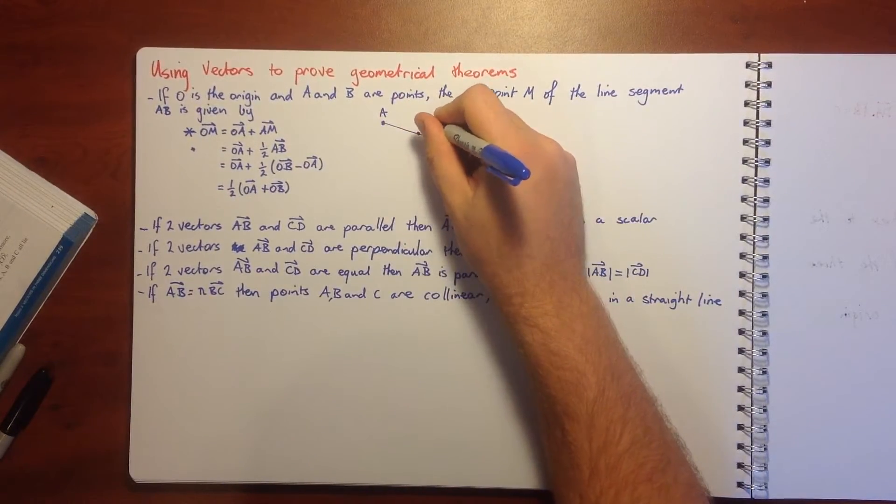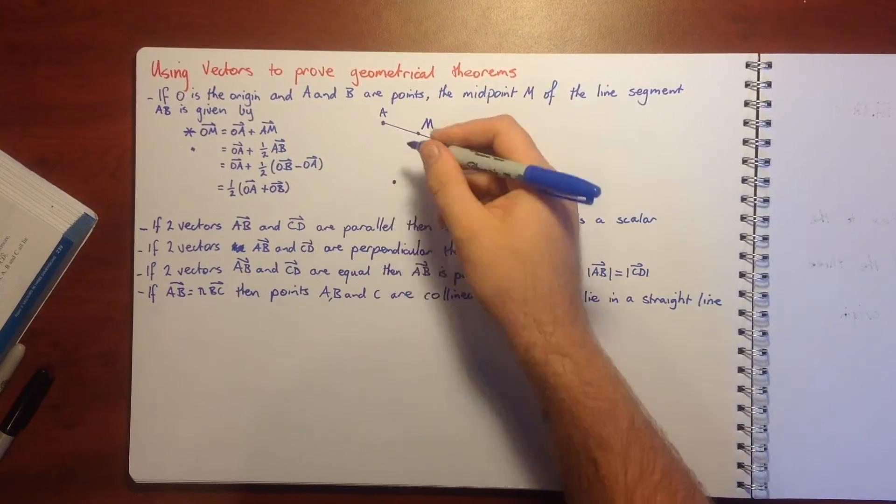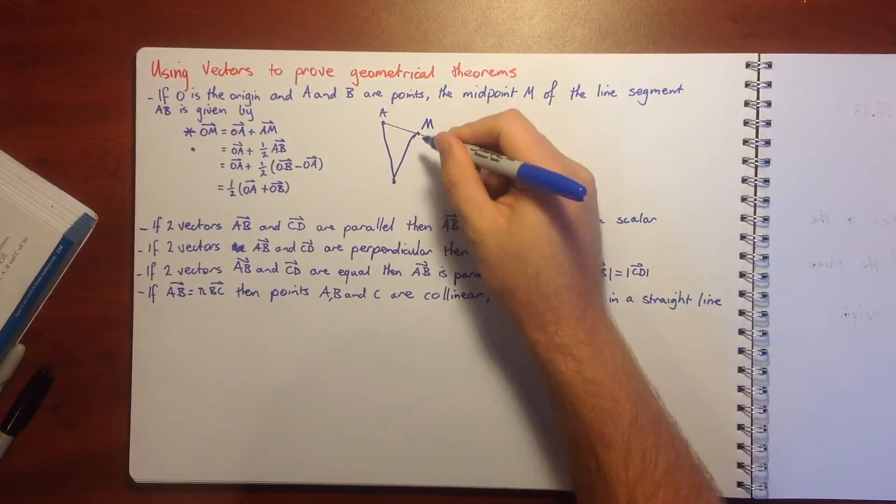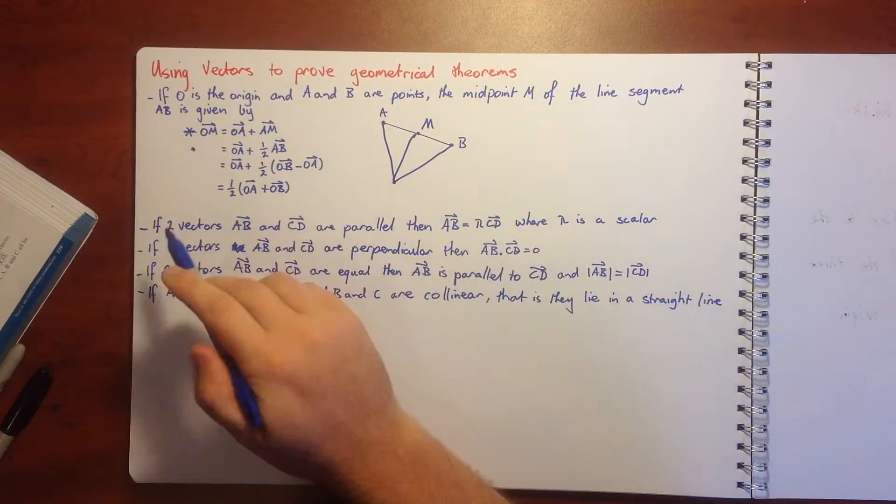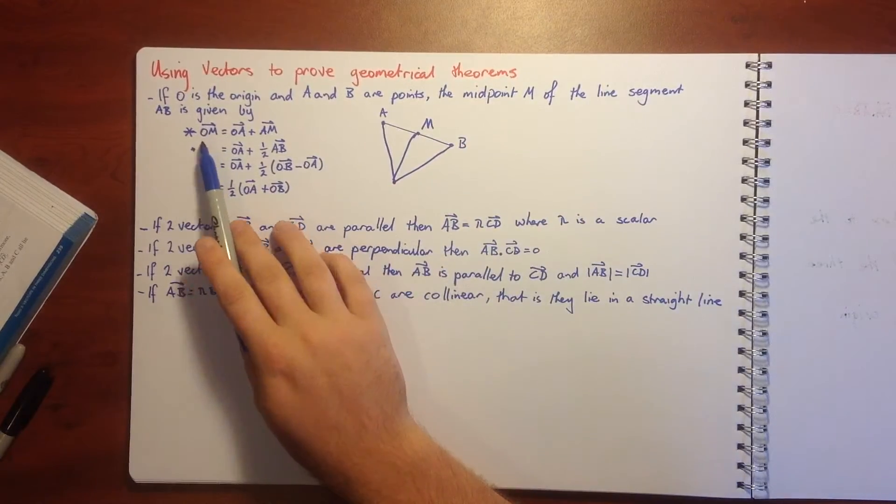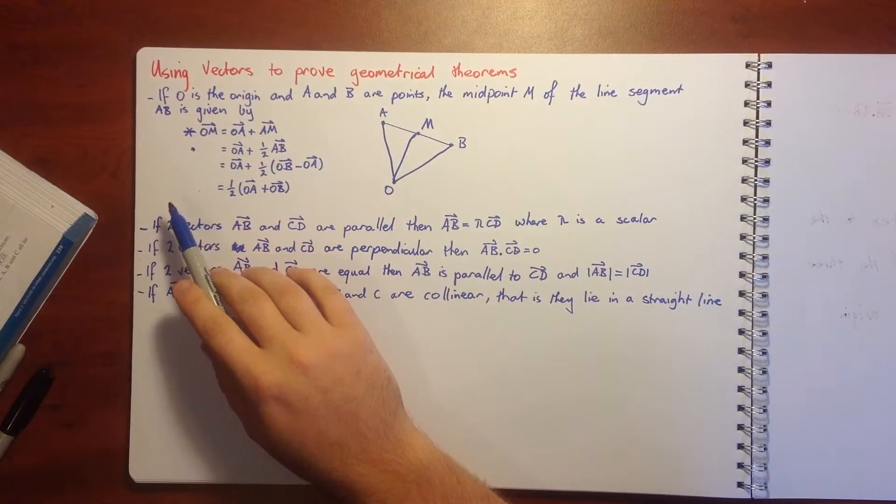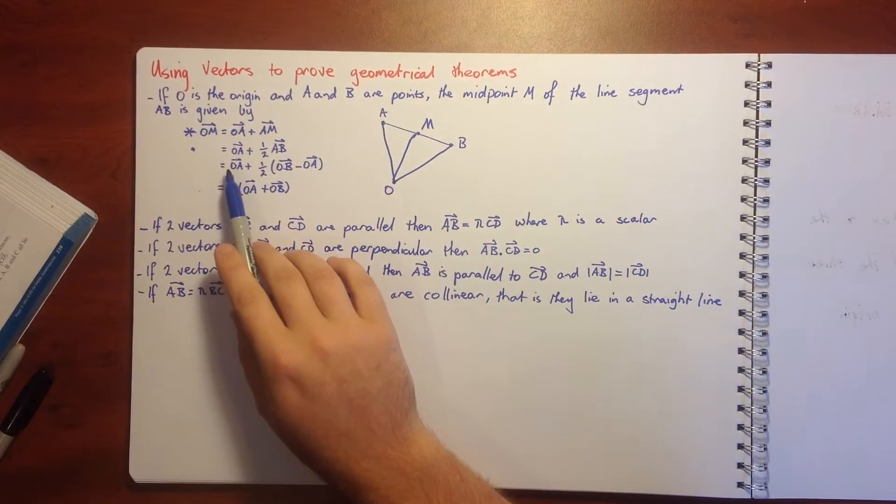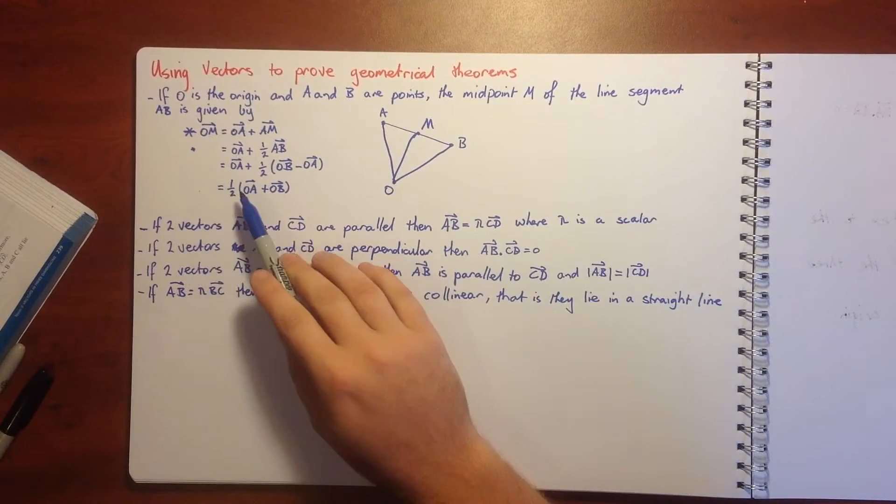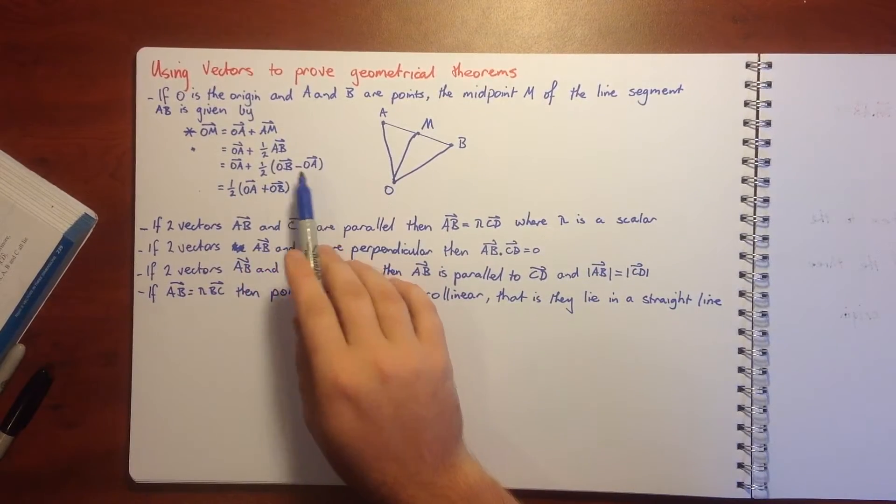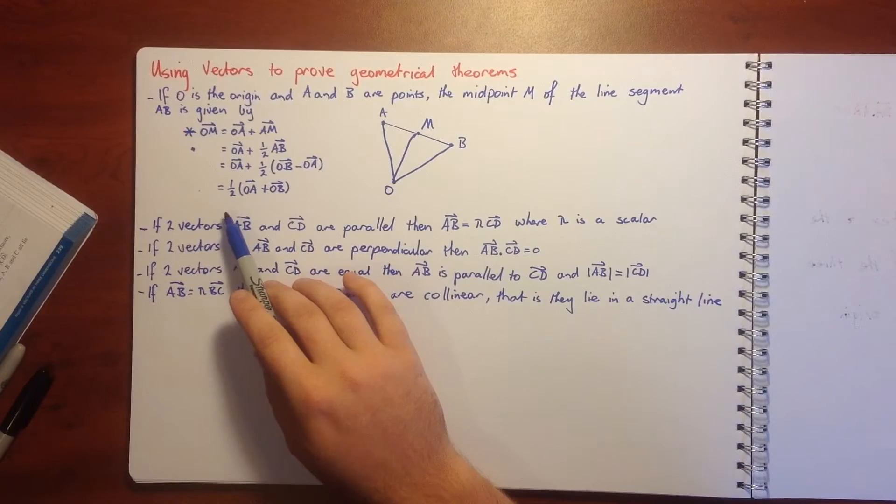If we've got A, B, M, and the origin, then we can say OM equals OA plus half AB, which is equal to OA plus a half of OB minus OA, and OM equals a half of OA plus OB.